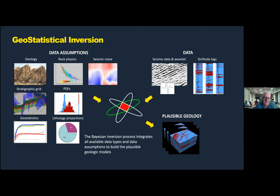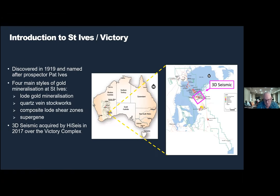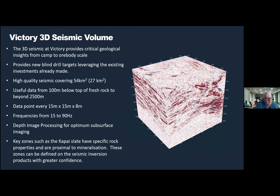The seismic inversion process flips the seismic experiment on its head: instead of passing a wavelet through a geologic model to produce a trace, you come out with a P-impedance model from a seismic trace. It's similar to a geostatistical simulation but models must honor and include the seismic data. Lots of inputs — the seismic data, the drill holes — generate multiple renderings of plausible geology, and from those multiple outputs you can produce probability volumes.